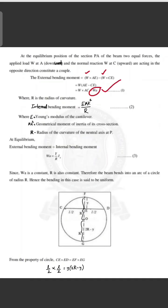Looking at R, the radius of curvature, we know the internal bending moment is EAk² divided by R. Here E is Young's modulus, Ak² is the geometrical moment of inertia of its cross-section, and R is the radius of curvature of the neutral axis at P. At equilibrium, the external bending moment and the internal bending moment are equal.